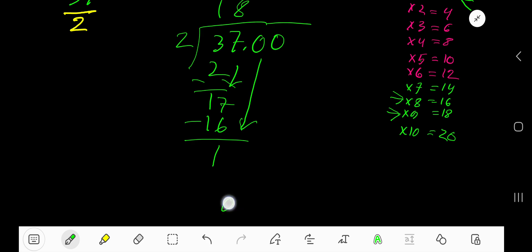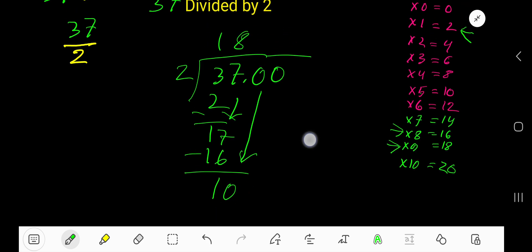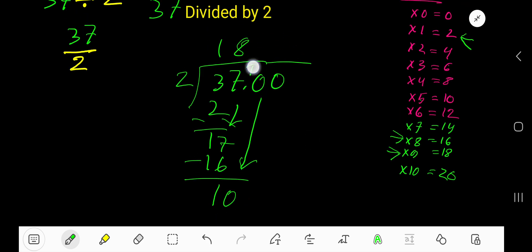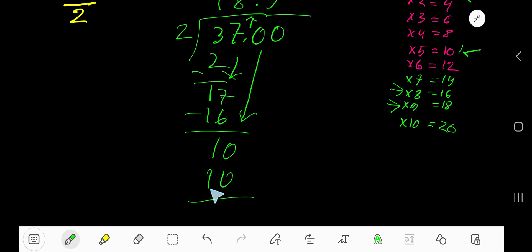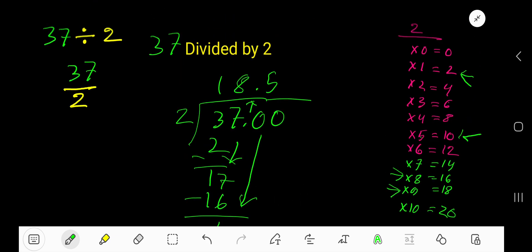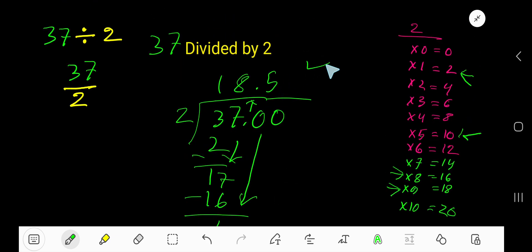down the first zero, so we are getting 10. Before the zero there is a decimal—the decimal must come to the answer directly. 2 goes into 10 how many times? 5 times, right. 5 times 2 is 10. Subtract 0. So 18.5 is your answer.